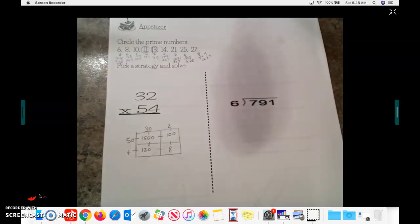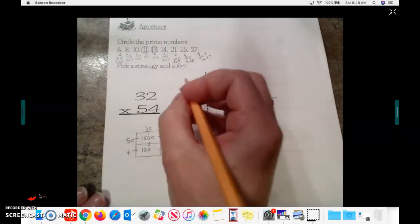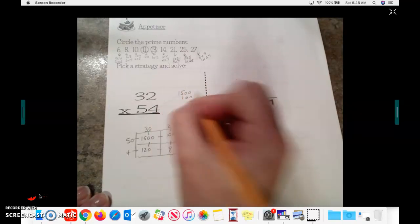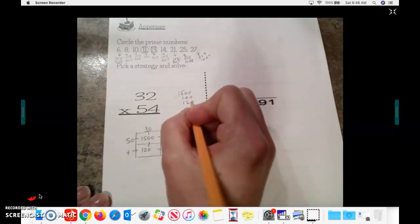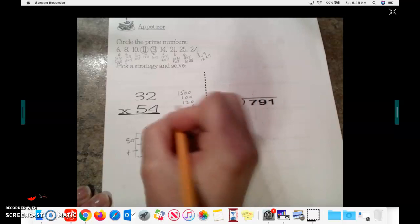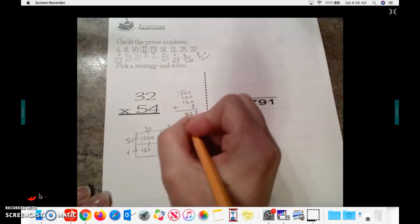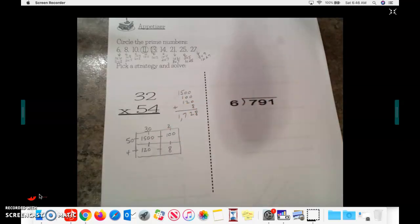Final step, which I think is the most difficult step, is making sure we line up our addition. So I have 1,500, 100, 120, and 8. I'm going to add those up. It's going to give me my answer. 5, 6, 7, 1,728.